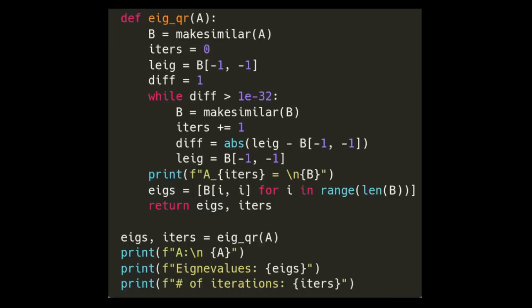Then to actually demonstrate this method, we're going to use this eig_qr function. You can see the first thing that we're doing is we're computing a similar matrix for our original A matrix. We're keeping track of our total number of iterations. This leig value, we're setting it to be the last eigenvalue along our diagonal of each similar matrix. This is just going to be the first similar matrix up here. But later on in the while loop, you can see that we're resetting that to the last value of every single similar matrix. That's going to be very important when computing the difference.